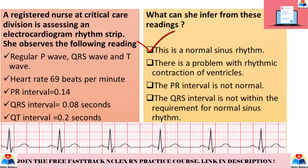The correct answer is the first option — this is a normal sinus rhythm. The conditions for normal sinus rhythm are: P-wave before each QRS should be between 0.12 to 0.20 seconds; QRS interval is 0.04 to 0.12 seconds; QT interval should be less than 0.4 seconds. Since all the parameters given satisfy these criteria, it is a normal sinus rhythm.